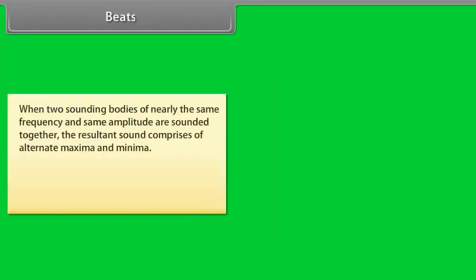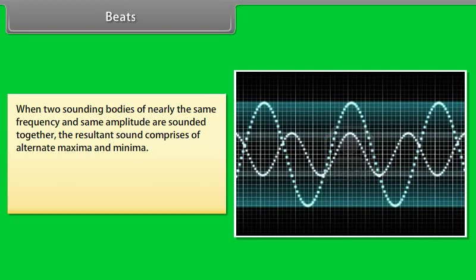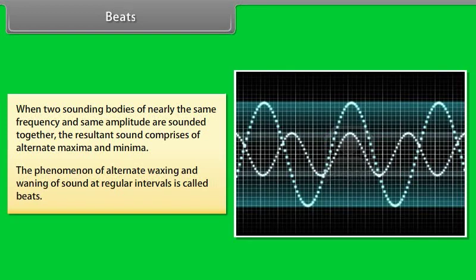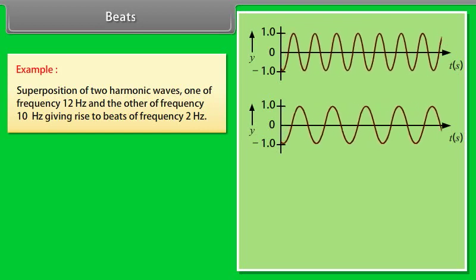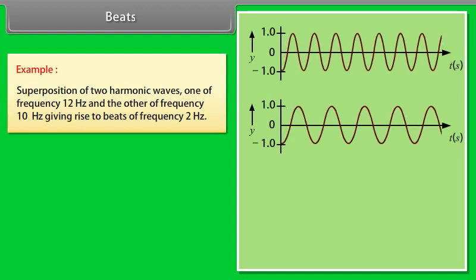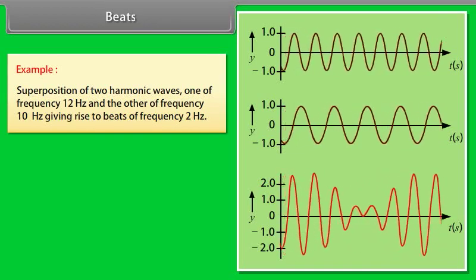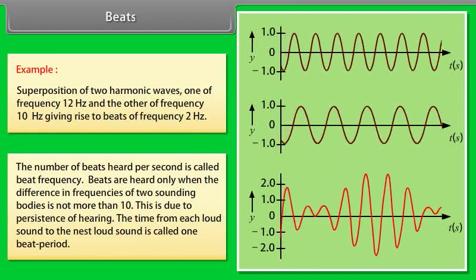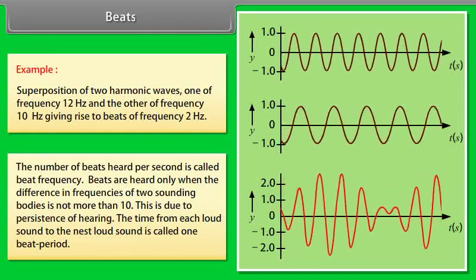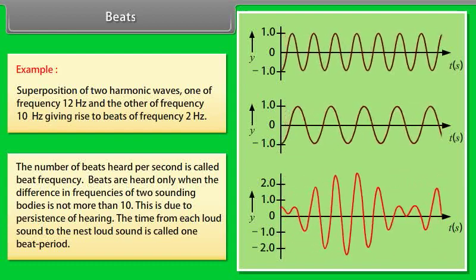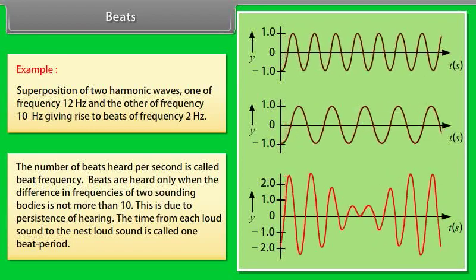Beats: when two sounding bodies of nearly the same frequency and same amplitude are sounded together, the resultant sound comprises alternate maxima and minima. The phenomenon of alternate waxing and waning of sound at regular intervals is called beats. For example, two harmonic waves — one of 12 Hz and one of 10 Hz — when superimposed give beats of frequency 2 Hz. The number of beats heard per second is called the beat frequency. Beats are heard only when the difference in frequencies of the two sounding bodies is not more than 10. The time from each loud sound to the next is called one beat period.